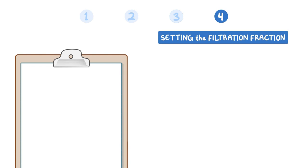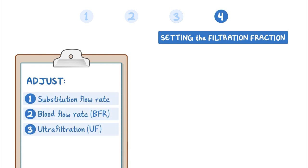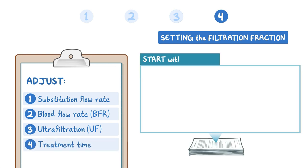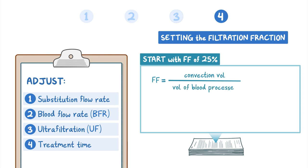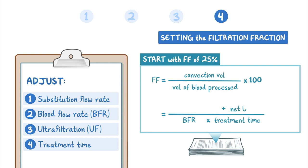Step 4 sets the FF by adjusting substitution flow rate, BFR, ultrafiltration, and/or treatment time. Studies suggest starting with an FF of about 25%. FF is calculated by dividing the convective volume by the volume of the blood processed, then multiplying by 100. The volume of blood processed is the BFR multiplied by treatment time, and the convection volume is the sum of the net ultrafiltrate, or UF, and the substitution volume.